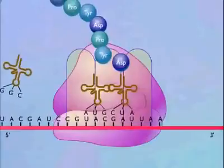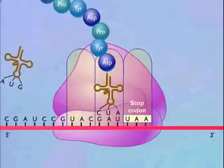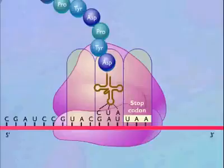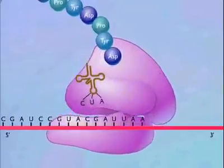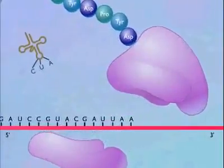Elongation of the polypeptide is terminated when a stop codon moves into the A-site. A stop codon does not specify an amino acid and does not have a corresponding transfer RNA. The ribosome dissociates into the 30S and 50S subunits, and the messenger RNA and protein are released.